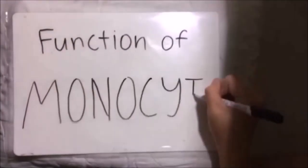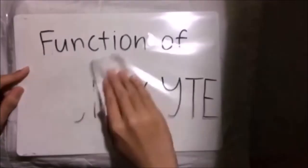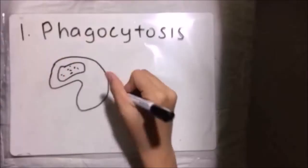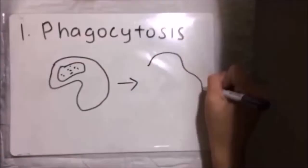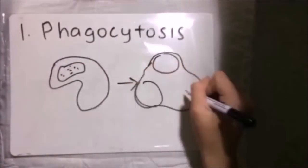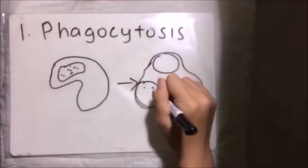Now we shall take a look at what monocytes can do. They carry out the process of phagocytosis. When a foreign body invades, they have the ability to change into another cell form called macrophages before facing the foreign body's attack.